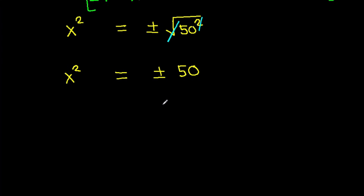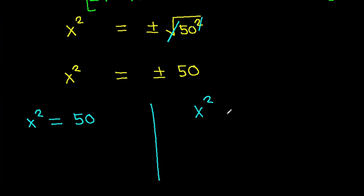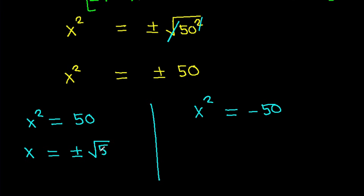Now, x squared equals 50, and x squared equals minus 50. And again, x will be plus minus root 50.